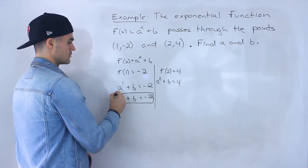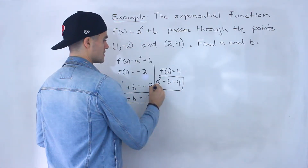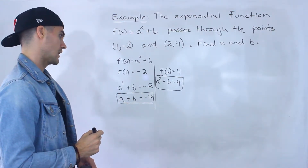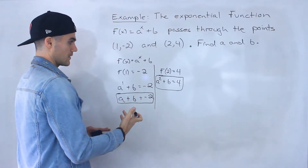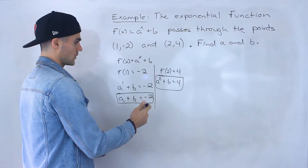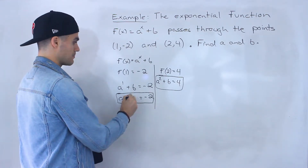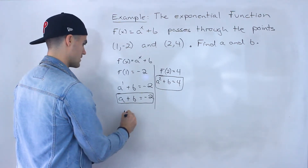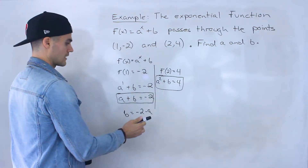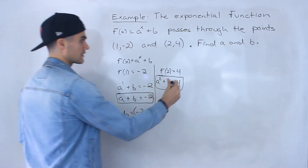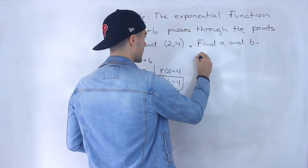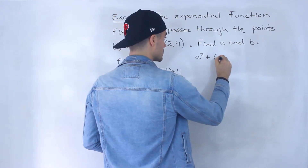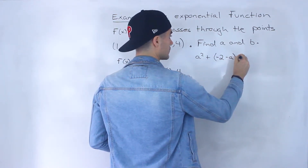Now we've got two equations and two unknowns. I'm going to isolate for b in the first equation because b is by itself there. So b equals negative 2 minus a. Then I'm going to take this expression and plug it into the second equation. So we'll have a squared plus, instead of b, we write negative 2 minus a, equals 4.